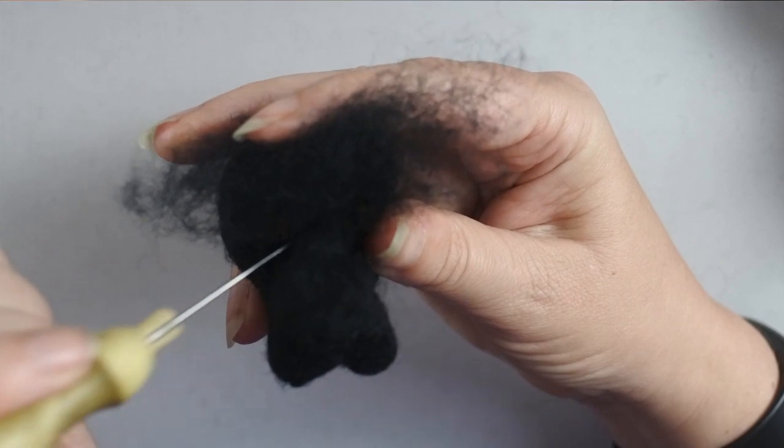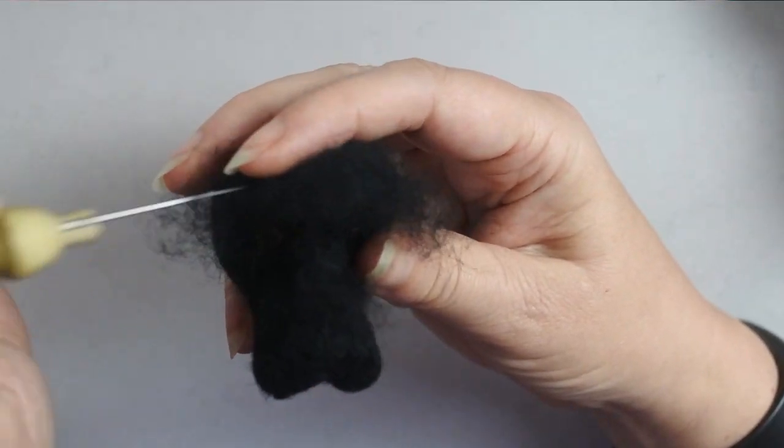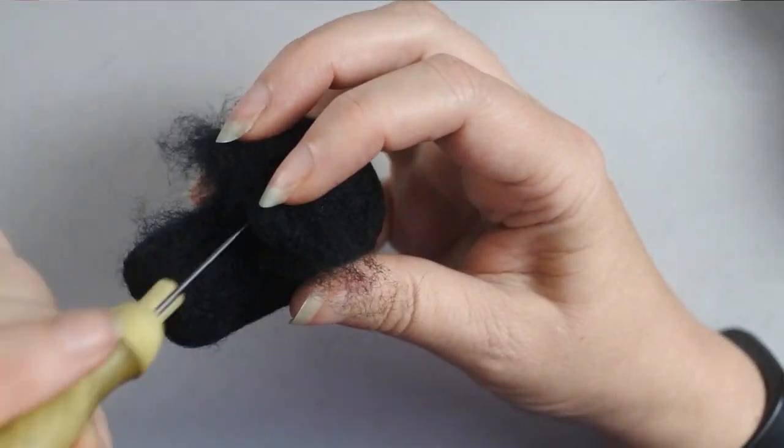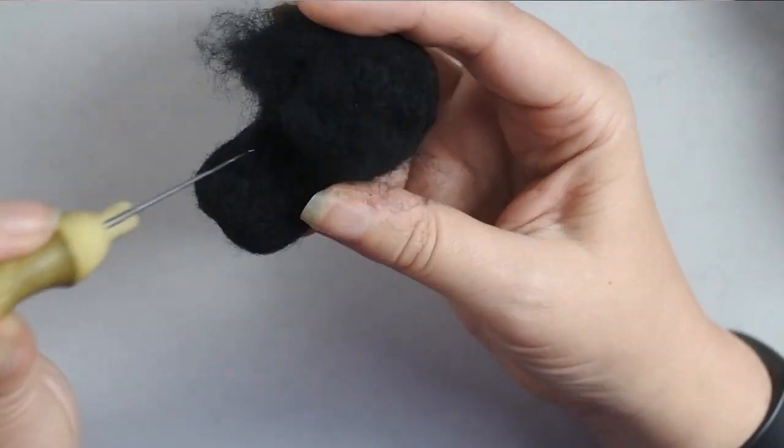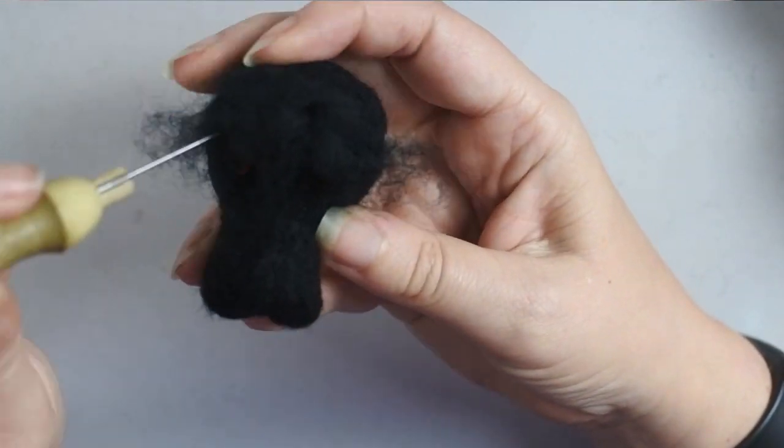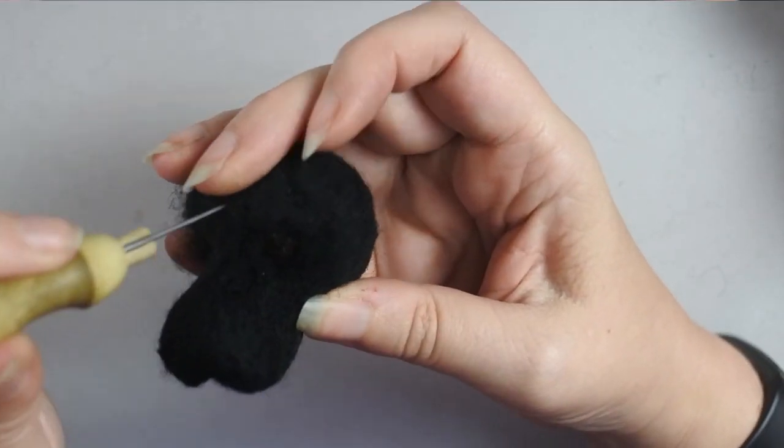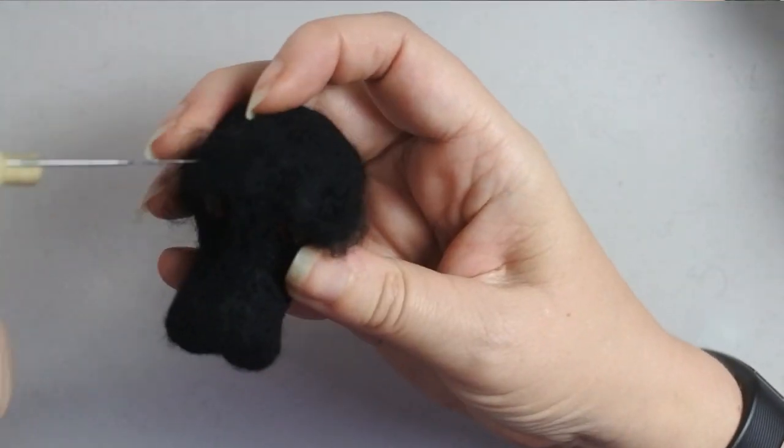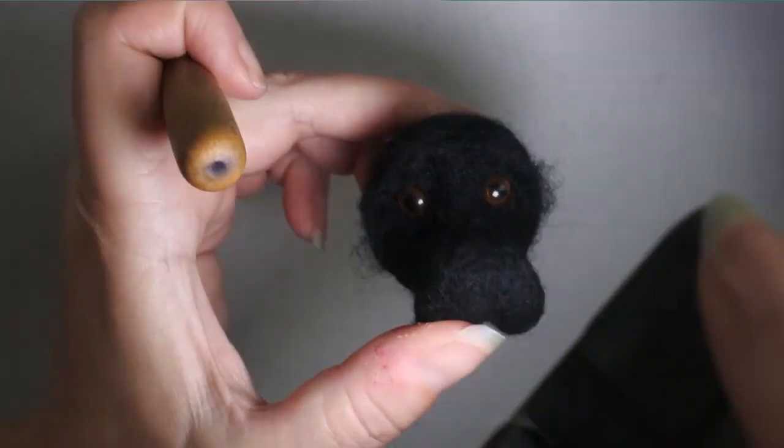I want to build up his brow a little bit more. Building up anything is just a case of adding a little bit of fluff and then felting it into that area. I'm building up down the center of the nose and then up and around over the tops of the eyes.